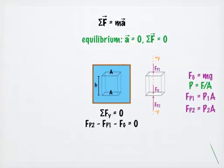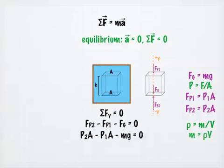We can now substitute in our expressions for our forces. We learned previously that density equals mass divided by volume. That means the mass of the fluid in our column equals the density of the fluid multiplied by the volume of the column. The volume of our column equals the surface area A multiplied by the height.